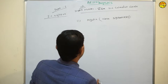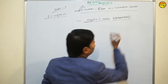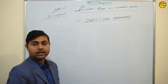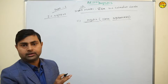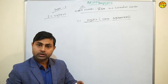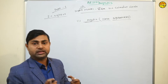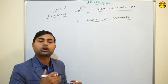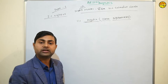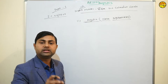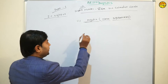The first defect is Myopia, also called near-sightedness. In myopia, nearby objects can be seen clearly but distant objects cannot be seen clearly. Those persons who are suffering from myopia can see nearby objects clearly, but distant objects cannot be seen. This is the definition of myopia.